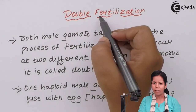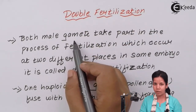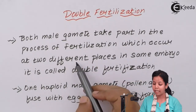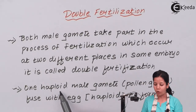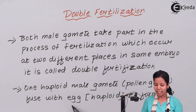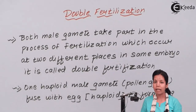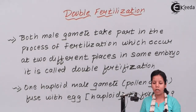Double fertilization — why is this process called double fertilization? Since both male gametes take part in fertilization, which occurs at two different places in the same ovary. One haploid male gamete, with 23 chromosomes, meets the egg which is also haploid with 23 chromosomes, to form the zygote or seed which will be diploid. This process is called syngami.